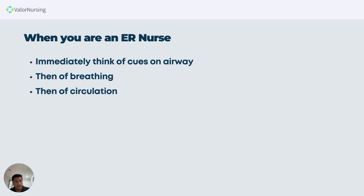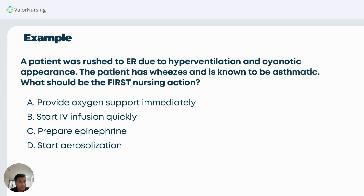I will be giving some examples, and this session will be very short — I think the shortest so far. So let's have an example question: a patient was rushed to the ER due to hyperventilation, and has a cyanotic appearance. The patient has wheezes — wheezing is the pathognomonic sign — and is known to be asthmatic. When you see wheezing, most of the time the question is about asthma. What should be the first nursing action?